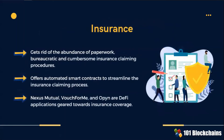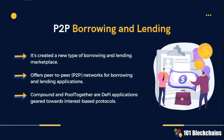Insurance services reduce the inherent risk of DeFi's fully automated and decentralized applications. Automated smart contracts streamline the insurance claiming process. Peer-to-peer borrowing and lending operations are on a new level with DeFi. As an example, Compound and Pool Together are DeFi applications geared towards interest-based protocols.